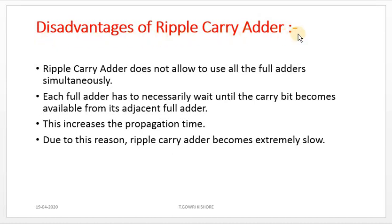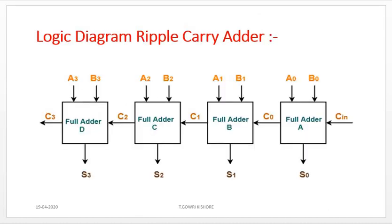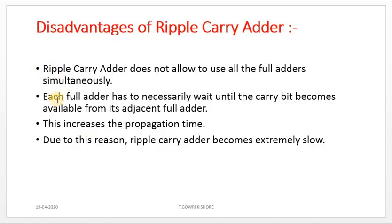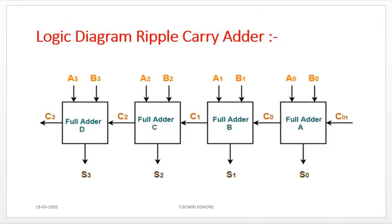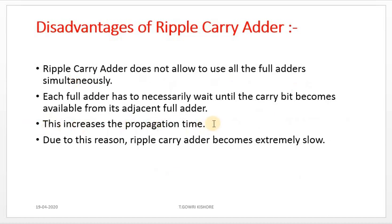Disadvantages of the ripple-carry-adder: a ripple-carry-adder does not allow all full-adders to work simultaneously. Each full-adder must wait until the carry-bit becomes available from its adjacent full-adder. For example, full-adder B must wait until full-adder A produces C-out, and full-adder C must wait until C-1 is produced by full-adder B. This increases propagation delay.